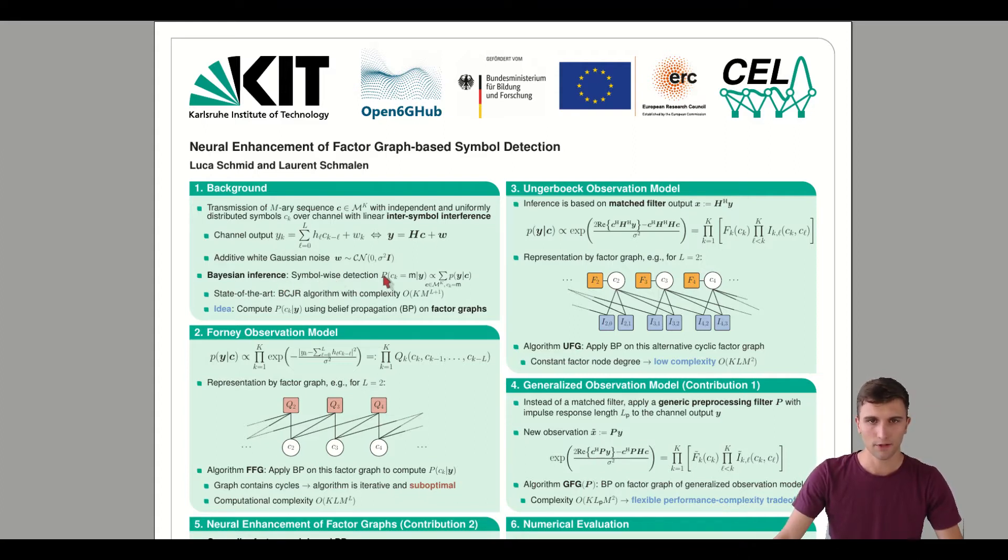Symbol detection means we want to get the symbol-wise a posteriori probability p from the symbol Ck given the complete observation y.